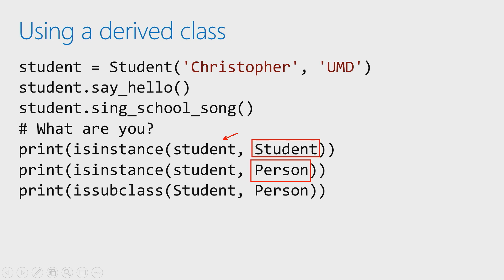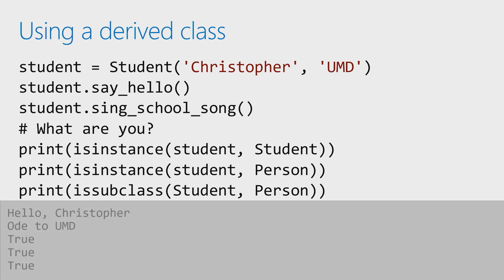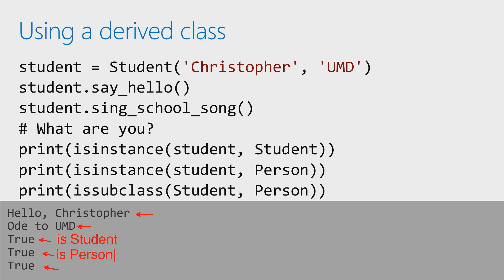Last but not least, I can explore the hierarchy. I can say issubclass — is student a subclass of person? In other words, does it inherit? And the answer is yes. So breaking this down in the output: there is the say_hello, there is the sing_the_school_song. The top result is 'is this a student?' — true, because it is. The next one is 'is this a person?' — true, because we inherited from it. And last is 'is student a subclass of person?' — yes, because of the fact that we inherit.